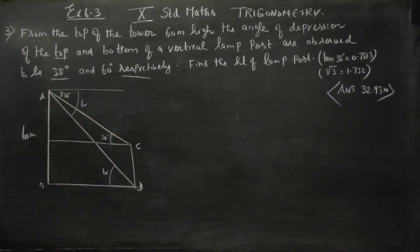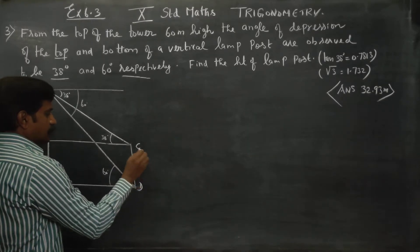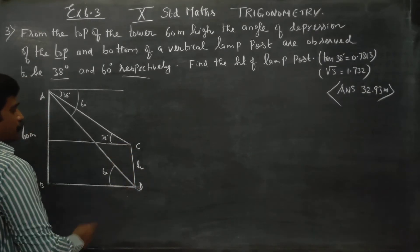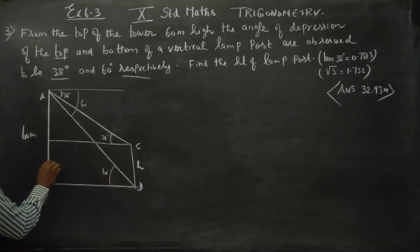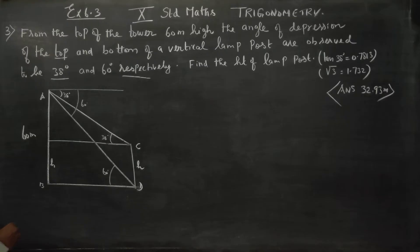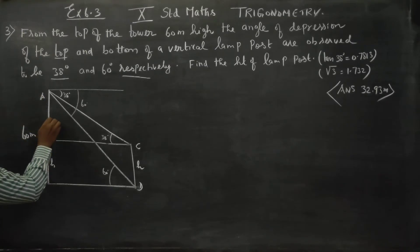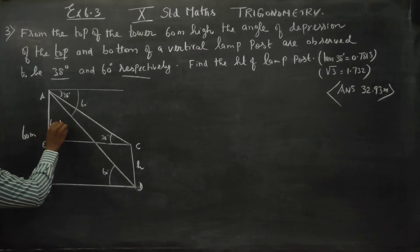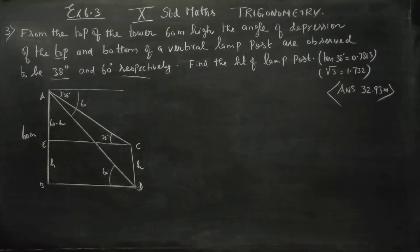We need to find the height of the lamp post. Let the lamp post height be H. So CD equals H. The remaining height from E to A is 60 minus H. This is labeled as E and C, with height 60 minus H.